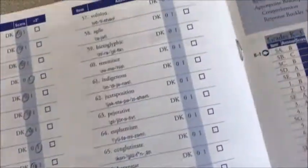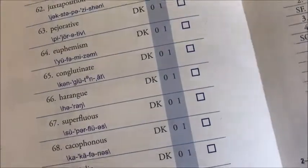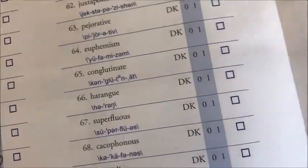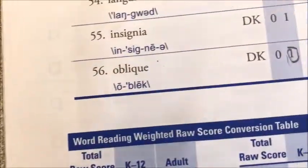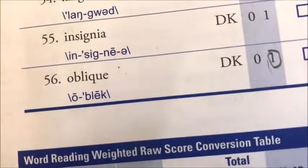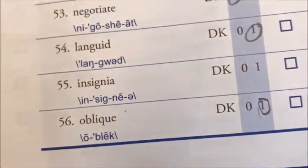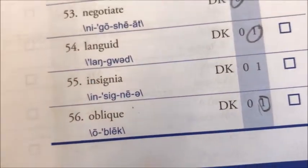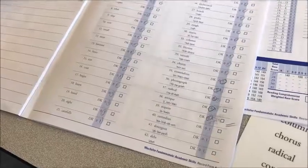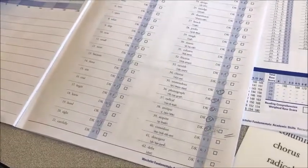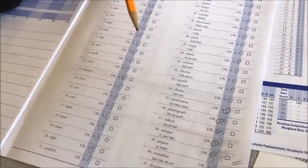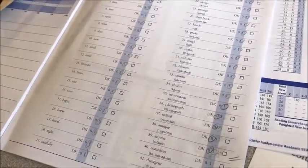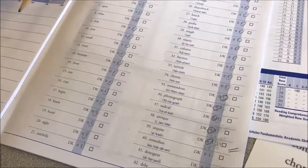But if they go on and then 10 words later say, 'oh, that word wasn't oblique,' the incorrect mark stands. One of the things to mention is that you don't help a student — so you don't give a student assistance if they get stuck. Just tell them to guess or go on.